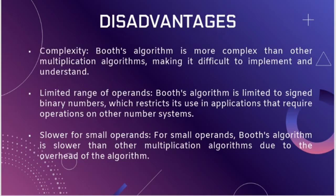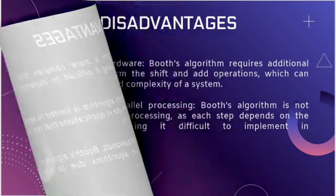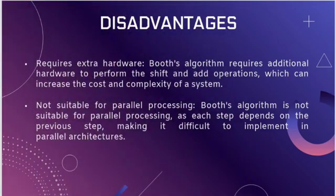For small operands, Booth's algorithm is slower than other multiplication algorithms due to the overhead of the algorithm. It also requires additional hardware to perform the shift and add operations, which can increase the cost and complexity of the system. Furthermore, Booth's algorithm is not suitable for parallel processing, as each step depends on the previous step, making it difficult to implement in parallel architectures. Thank you.